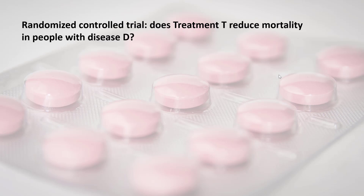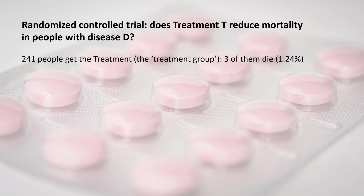The data here, independently of what treatment is being discussed, is incredibly interesting in highlighting the issue of the dubious value of p-values and classical statistical hypothesis testing. This was a randomized controlled trial trying to determine if treatment T reduces mortality in people with disease D.